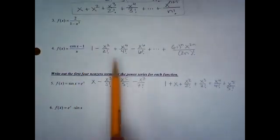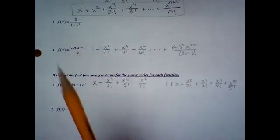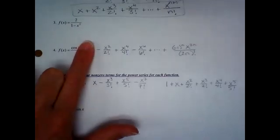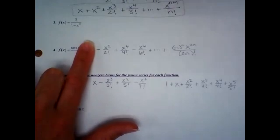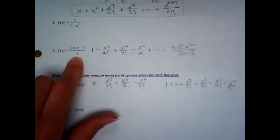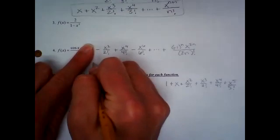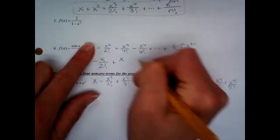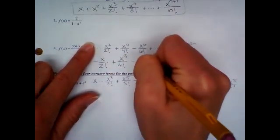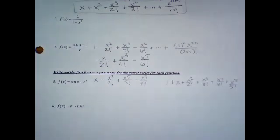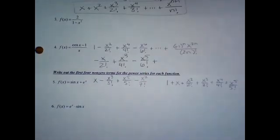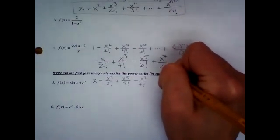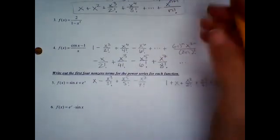This one's a little tricky because there are two things going on. Here's your series for cosine. The first thing we're going to do is subtract one — and that's it, the one is gone. Then we take every remaining term and divide by X, so that term is gone too. We divide all of these by X, giving us negative X over two factorial, plus X cubed over four factorial, minus X to the fifth over six factorial, plus X to the seventh over eight factorial — we need one more because it asked for the first four non-zero terms.